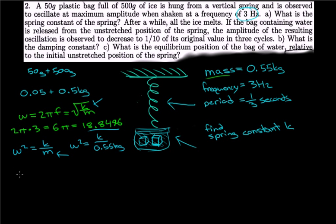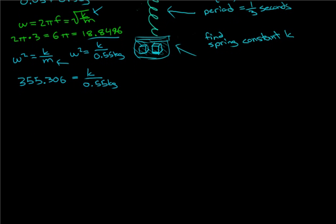If we square this, we get 355.306, and that equals K divided by 0.55 kilograms. So we take this and multiply it by 0.55, and that gives us K.